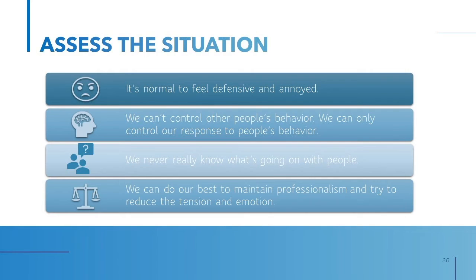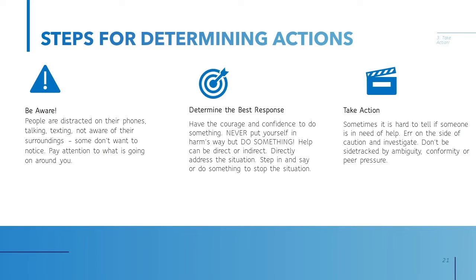Remember, it's normal to feel defensive and annoyed at people who aren't behaving professionally or respectfully. But we can't control other people's behavior — we can only control our response to their bad behavior. We also never really know what's going on with people, so there may be underlying issues to consider. We can do our best to maintain professionalism and reduce tension, but sometimes things will get out of hand, so we just have to accept that reality. There are three steps for determining the appropriate action.